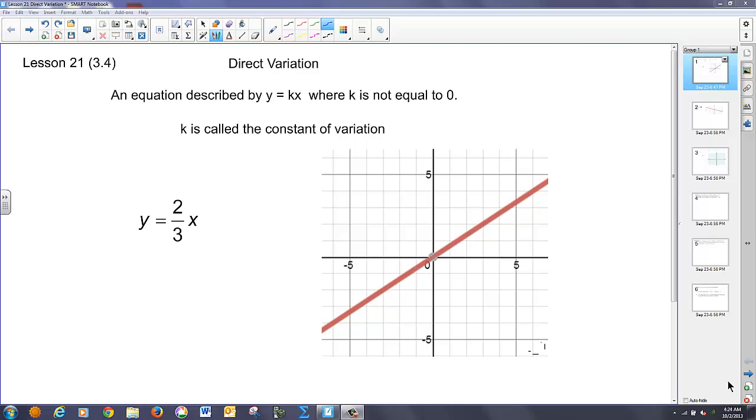Today we're going to continue our conversation related to slope. However, we're going to talk about something called direct variation. And what it is, it's basically an equation described by the formula y equals kx, where we know k is not equal to zero. We call k a constant of variation.